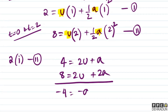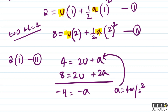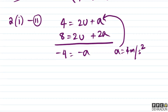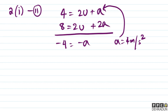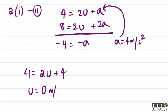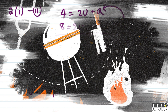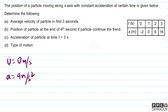Clearly, the value of a comes out to be 4 m/s². Now substituting this value of a back into the first equation: 4 = 2u + 4, so u = 0. So the initial velocity u = 0 and acceleration a = 4 m/s².